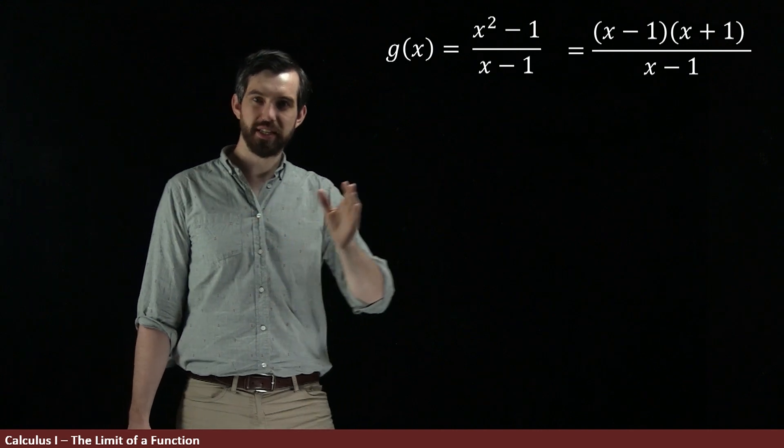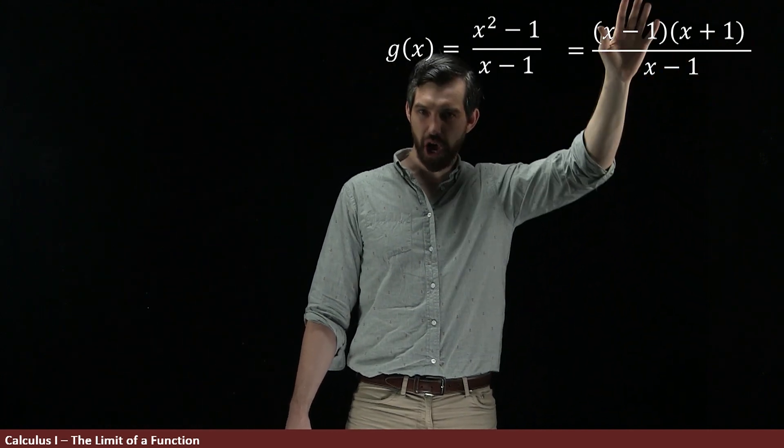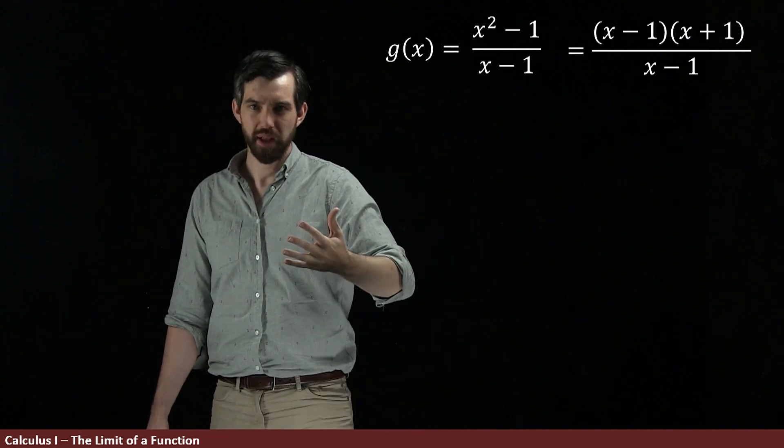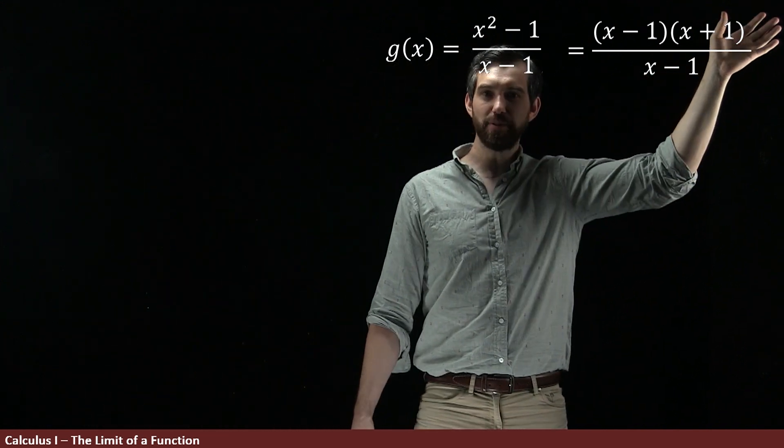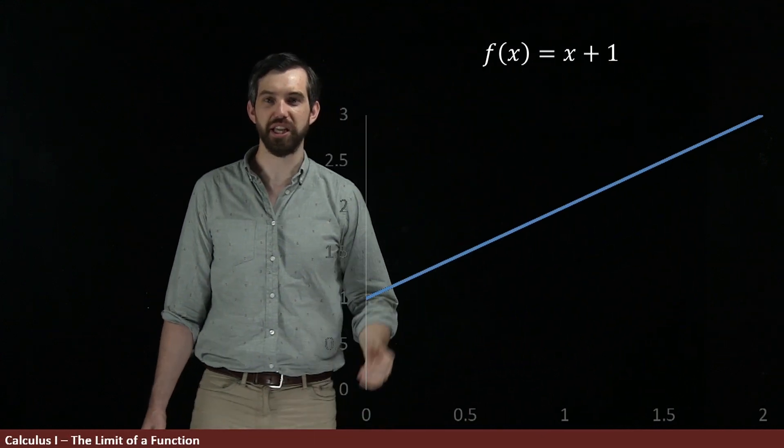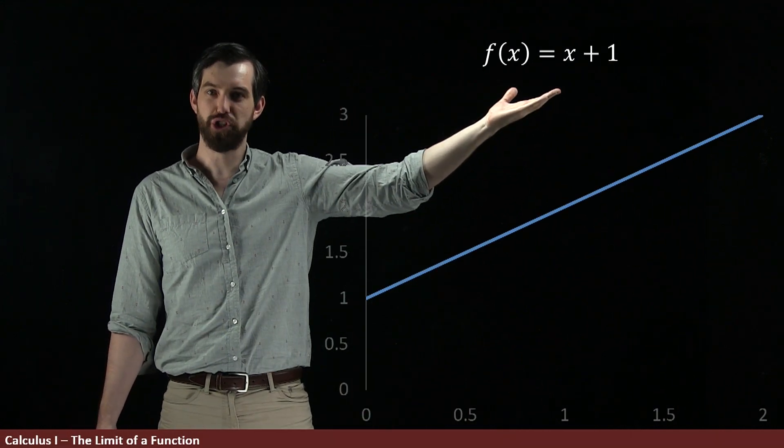Now, if you were to just cancel the x minus 1 and the x minus 1 on the top and the bottom, what you'd be left with was x plus 1. And if you just have x plus 1, well, that indeed was precisely what we had for f of x.